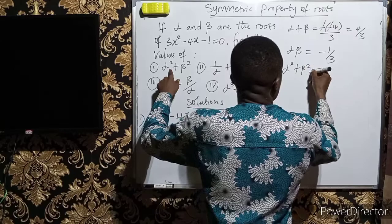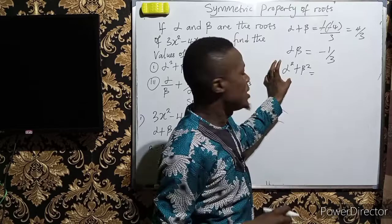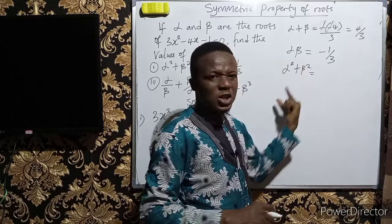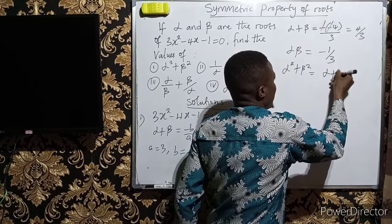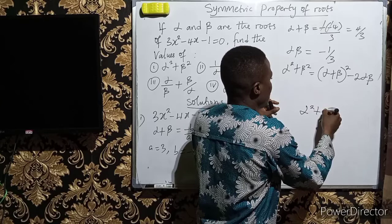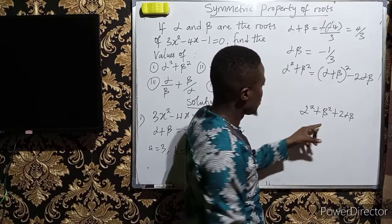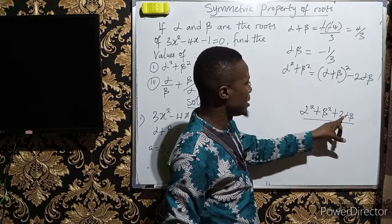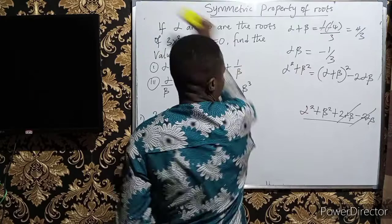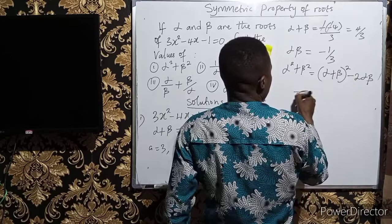For the first question we are asked to simplify alpha squared plus beta squared. To do this we need to break this expression down into alpha plus beta and alpha beta so we can substitute their values. We know that alpha squared plus beta squared can be written as alpha plus beta all squared minus 2 alpha beta, because when you expand the bracket you get alpha squared plus 2 alpha beta plus beta squared, and subtracting 2 alpha beta cancels the middle term, giving back alpha squared plus beta squared.